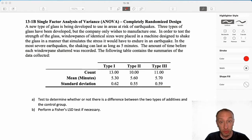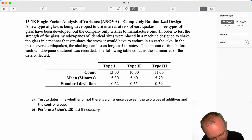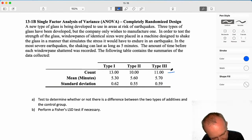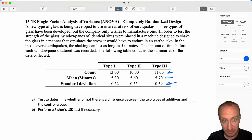Okay, so we've got three different types of glass. Here I can see I've got three different sample sizes. We have our sample means, and we have our sample standard deviations.